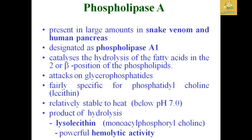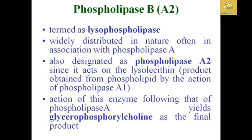Phospholipase A1 is present in large amounts in snake venom as well as in the human pancreas. It catalyzes mainly the hydrolysis of fatty acids at the sn-2 (beta) position of the phospholipid. It is specific for glycerophospholipids, particularly phosphorylcholine groups such as lecithin, and it is relatively stable to heat below pH 7 (acidic conditions). The product of phospholipase A1 hydrolysis is lysophosphatidylcholine (lysolecithin), and powerful hemolytic activity is associated with phospholipase A during the hydrolysis process.